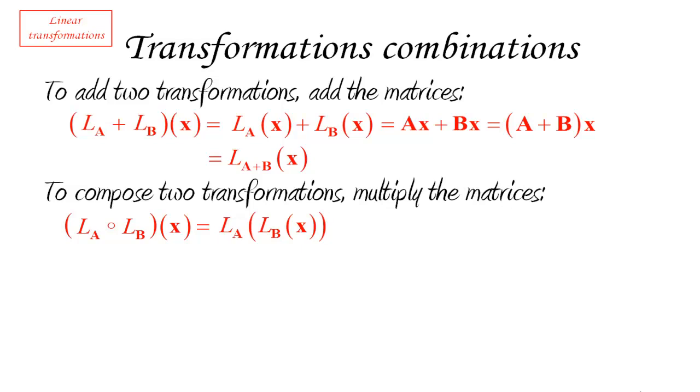Now, notice that what that means is that the composition of these two functions must have as domain, the same domain as LB. But then the domain of LA must be the co-domain of LB, and then its eventual co-domain is going to be the co-domain of A.